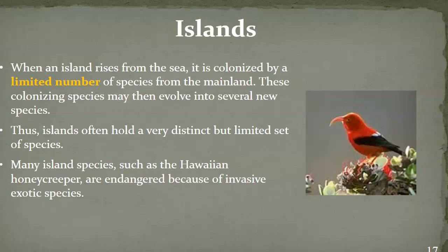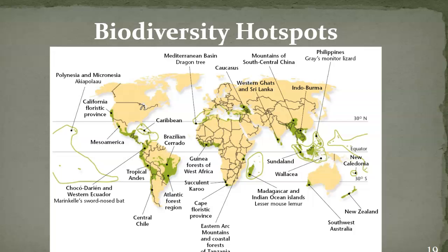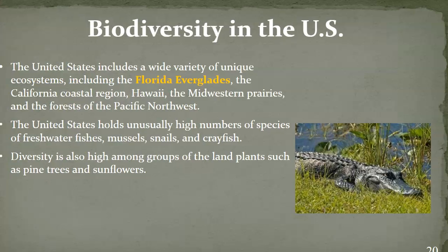We also look at particular islands — one example is the Galapagos Islands, known for giant tortoises and finches from studying Darwin. Some islands have limited numbers of species, and scientists go there to assess global climate impact. There are also biodiversity hotspots — tropical rainforests, coastal areas, and islands — areas with a high number of endemic species. Within the U.S., biodiversity hotspots include the Florida Everglades, the California coastal region, Hawaii, Midwestern prairies, and the forests of the Pacific Northwest, which have high numbers of freshwater fish, mussels, snails, and crayfish.